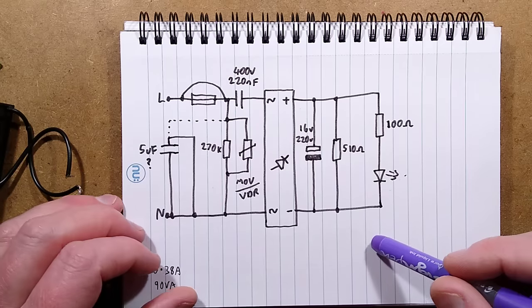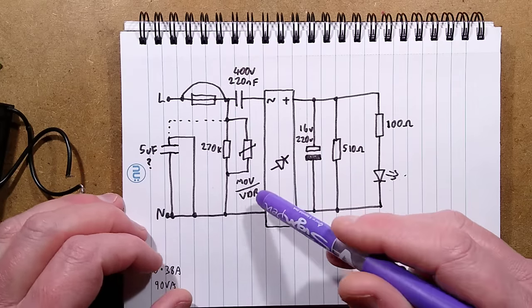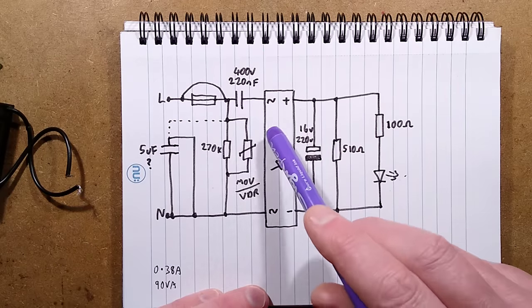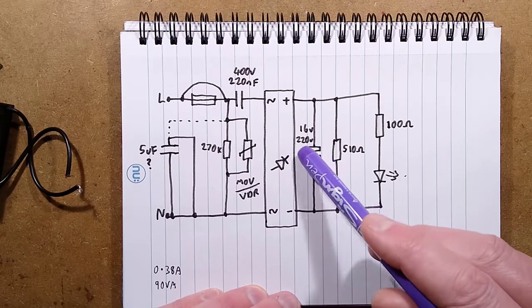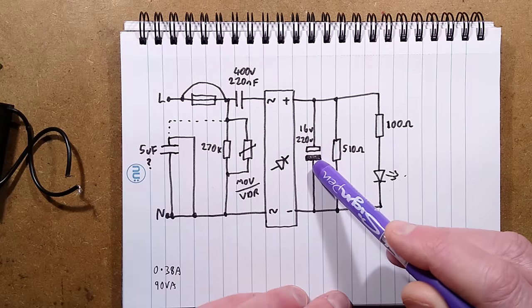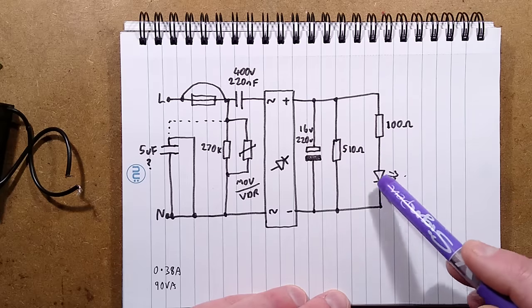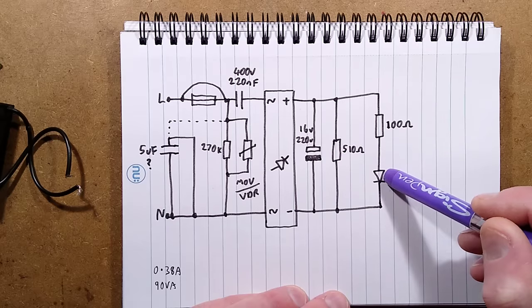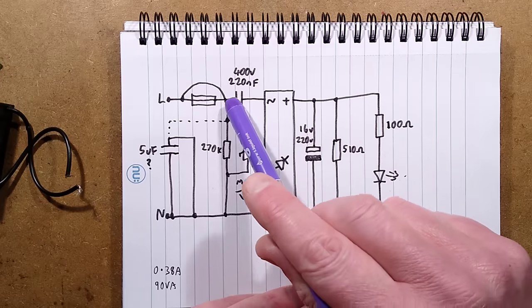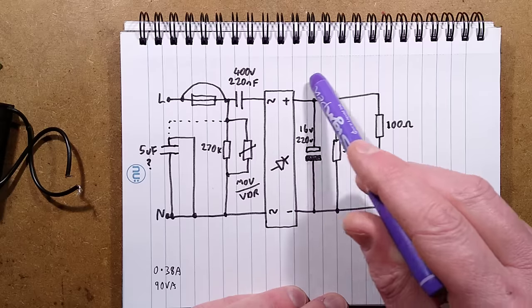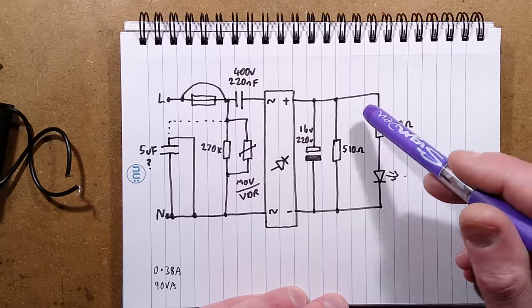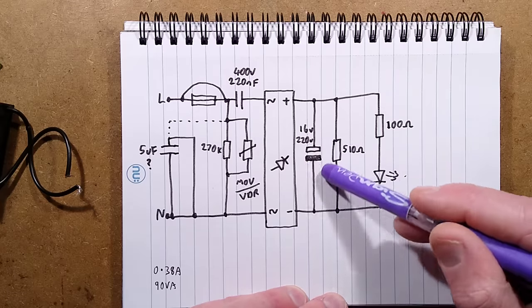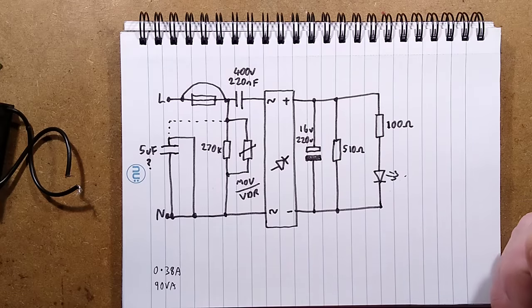Not ideal - it could have really done with that fuse actually, but as it is the tracks will just blow. Then it's just a standard capacitive dropper with the 220 nanofarad capacitor in line with a bridge rectifier, smoothing in the form of a 16 volt 220 microfarad capacitor, and that then goes through a 100 ohm resistor to the LED. The 510 ohm resistor acts as a safety feature if that LED goes open circuit. The capacitor will be about 18 milliamps running through that circuit.